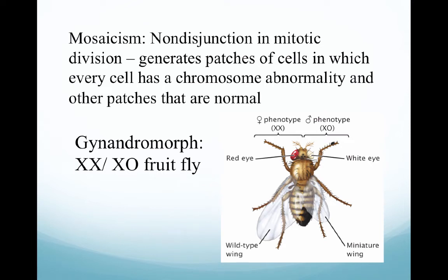As we finish up aneuploidy, I just want to share one more example of non-disjunction, and this actually occurs in Drosophila, or the fruit fly. This is a condition called mosaicism, where we see non-disjunction happen at the mitotic division level. What this does is generate patches of cells where every cell has a chromosome abnormality, and then the other patches end up being normal. So this individual we're looking at here is a gynandromorph.